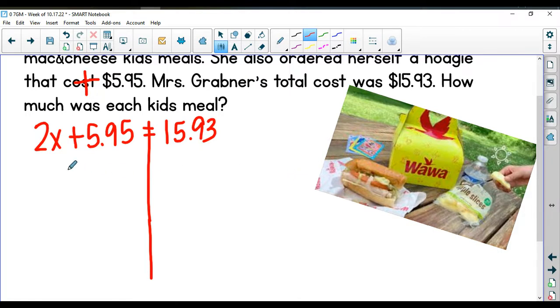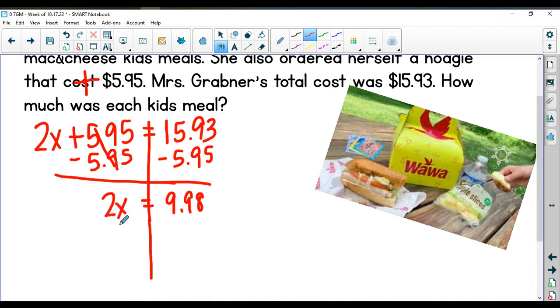So for this one to solve for your kids' meals, we're going to subtract the $5.95. When I take my $15.93 and I subtract the $5.95, I get $9.98. On this side I'm left with the 2x, 2 times x. I'm going to divide both sides by 2, which will leave me with a cost of $4.99 per kids' meal.